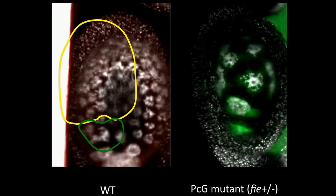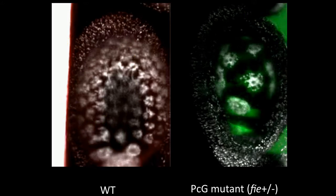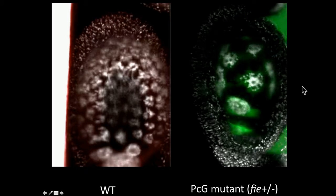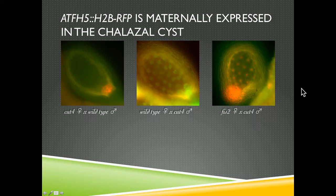Endosperm is important for seed size, but then we have these interactions with these three compartments. Another reason that seed size is difficult is because the endosperm is subjected to a type of gene regulation called parental genomic imprinting, whereby the expression of a gene depends more on the parent which provides the gene as opposed to the gene itself. And this is also regulated by polycomb.